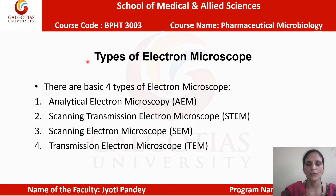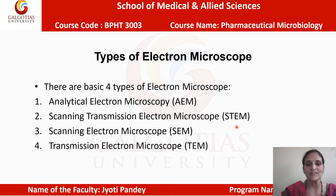Types of Electron Microscope. Electron Microscope is basically divided into four categories. First one is Analytical Electron Microscope, in short known as AEM. Next is Scanning Transmission Electron Microscope, STEM. Third one is Scanning Electron Microscope, SEM. Fourth one is Transmission Electron Microscope, TEM.